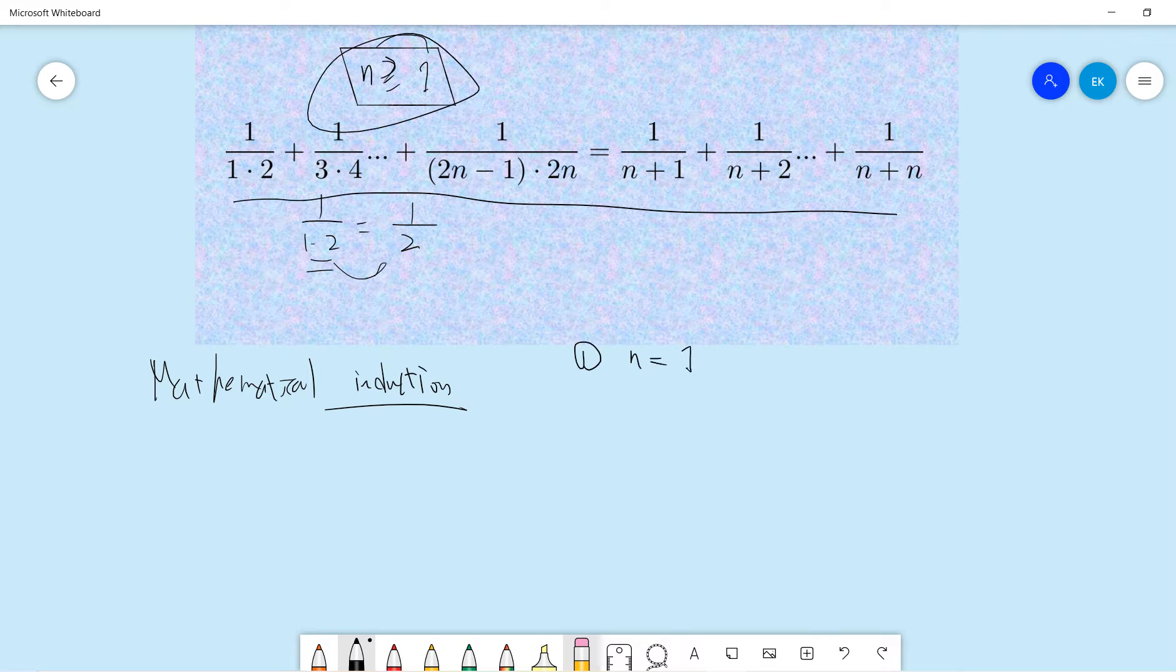So let's say n equals to 1. Maybe, okay, n equals to 1 is already proof, right? So let's say n equals to k is correct.